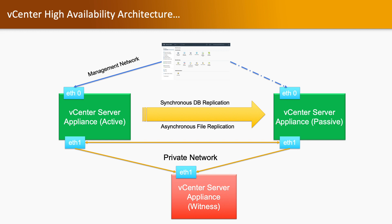Between the vCenter Server Appliance active and passive nodes, we have synchronous database replication and asynchronous file replication. The active node syncs all updates and data to the passive node, so that if the active node fails, the passive node can become the active node.